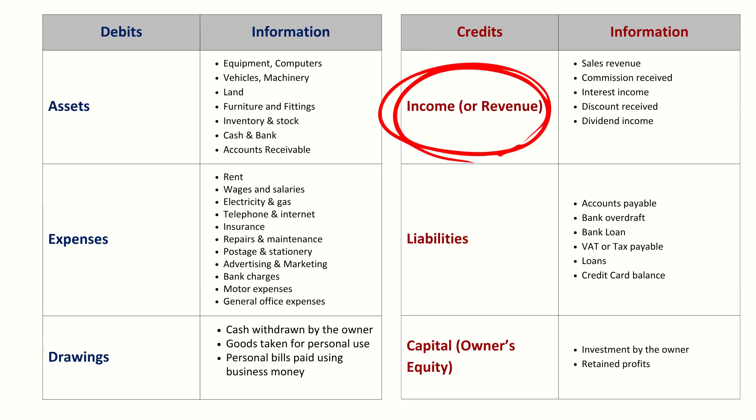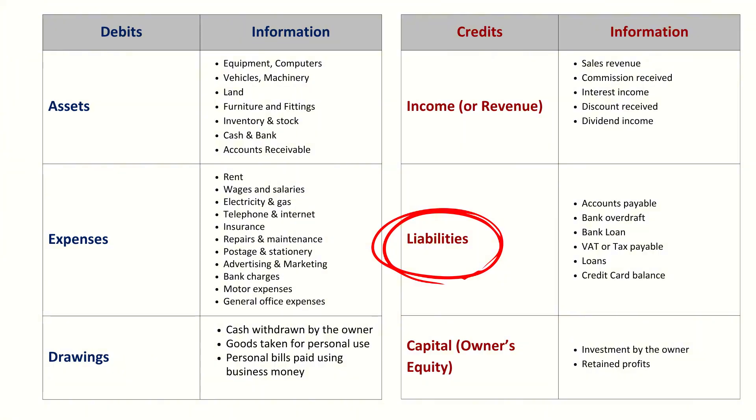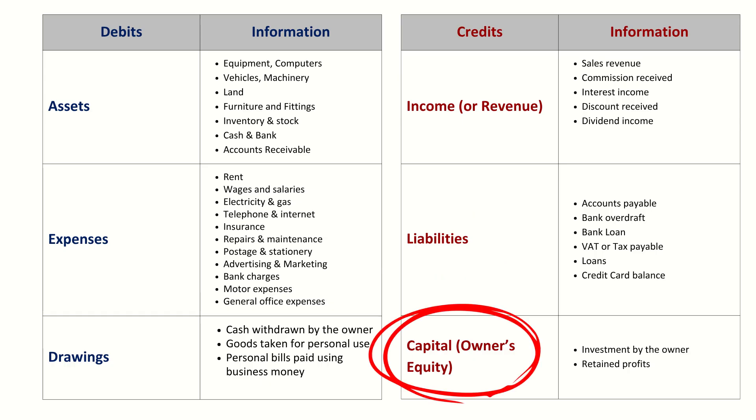On the credit side: Income or revenue — when the business earns money from sales or services, we credit the income account; for example, making a sale or earning service income. Liabilities — when the business owes money or takes on a debt, we credit the liability account; for example, taking out a loan or buying on credit. Capital or owner's equity — when the owner invests money into the business, we credit capital because it represents the owner's claim on the business; for example, the owner invests £2,000 to start the business.